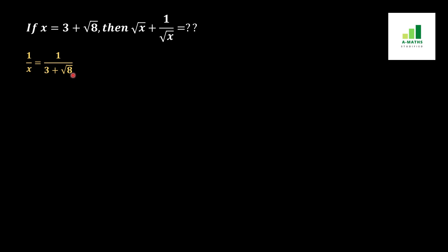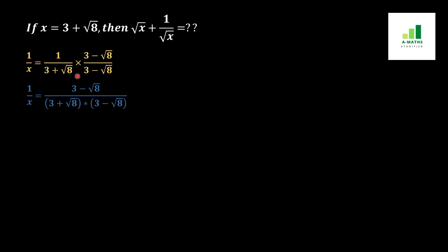We will multiply the fraction by 3 minus under root 8 over 3 minus under root 8. Multiplying both fractions, we will get 3 minus under root 8 over (3 plus under root 8) into (3 minus under root 8).